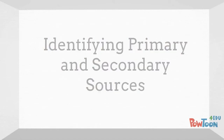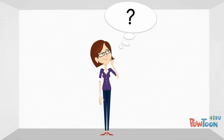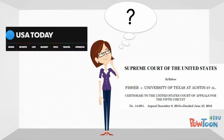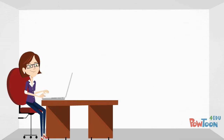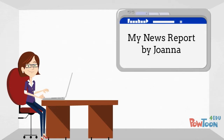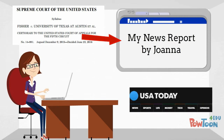One of the most important concepts for journalism students to understand is the difference between primary and secondary sources. When you report information to the public, your work should usually be based on primary sources, not secondary sources.